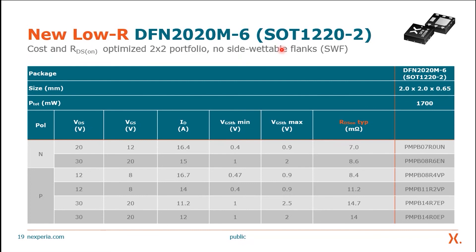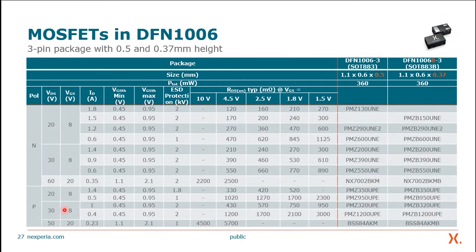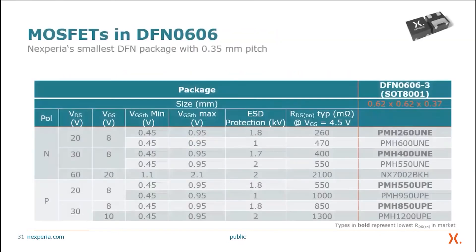Coming to smaller sizes: MOSFETs in DFN1010, or 1×1 mm. We have this package in two versions: a 3-pin version and a 6-pin version, available in N and P-channel, duals, and complementaries. Even smaller is our DFN10106 package at 1×0.6 mm, with pitch options of 0.5 and 0.37 mm, also with a broad N and P-channel portfolio. At Infineon we skipped the DFN0806 and went directly to the DFN0606, which gives you the same small pitch of 0.35 mm. This is currently the smallest package we offer, with a size of 0.6×0.6 mm and 0.37 mm height.